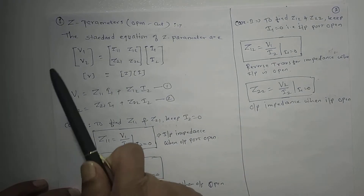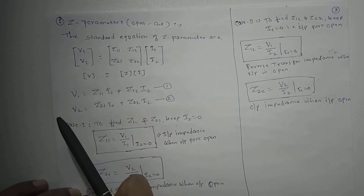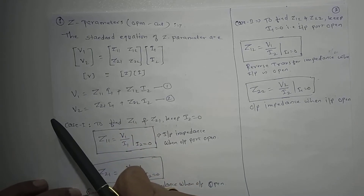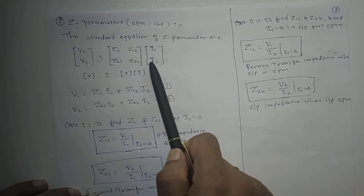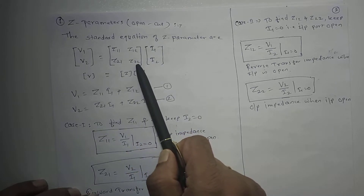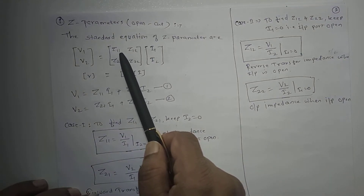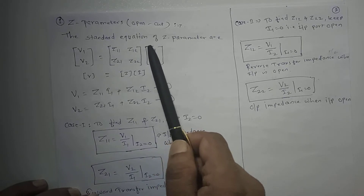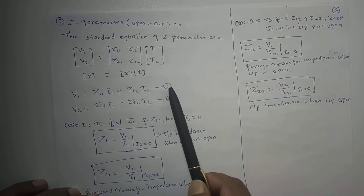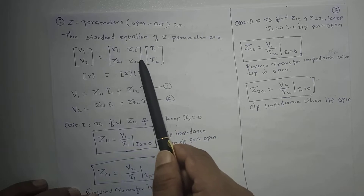The standard equation of Z parameters is V = Z × I, which is Ohm's law. The V matrix is a column matrix formed by the two variables V1 and V2. The I matrix is also a column matrix formed by the two currents I1 and I2. Z is a 2×2 impedance matrix containing Z11, Z12, Z21, and Z22. Writing the equations from this matrix form: V1 = Z11·I1 + Z12·I2, and V2 = Z21·I1 + Z22·I2.